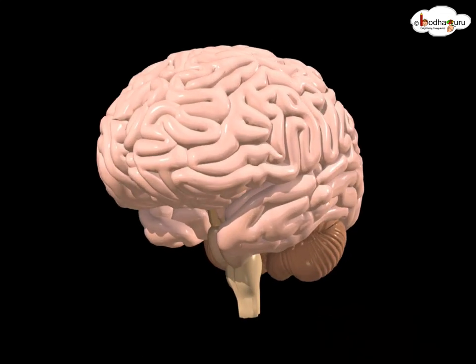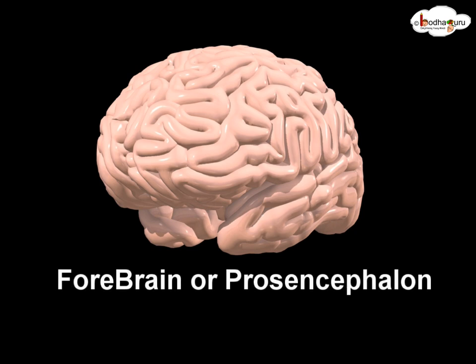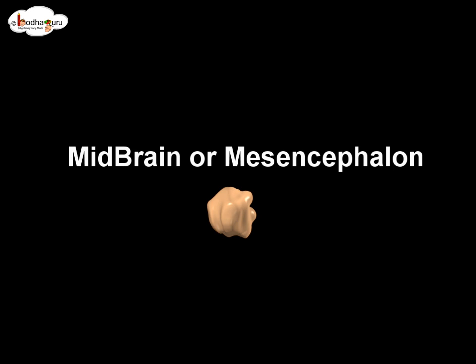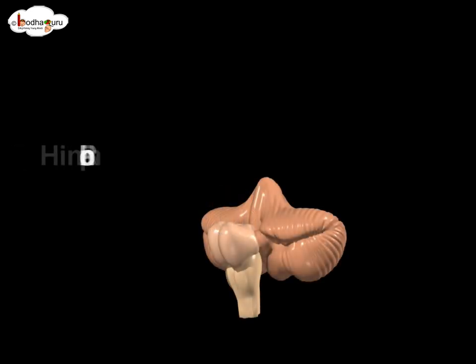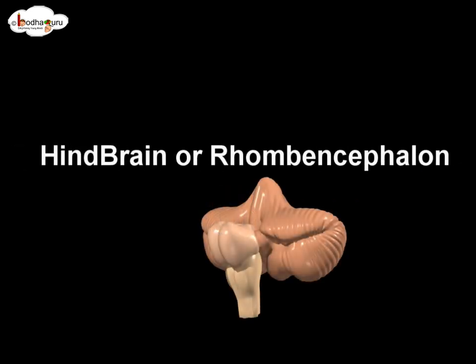The brain has three main divisions: forebrain or prosencephalon, midbrain or mesencephalon, and hindbrain or rhombencephalon.